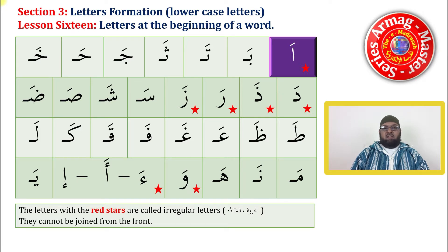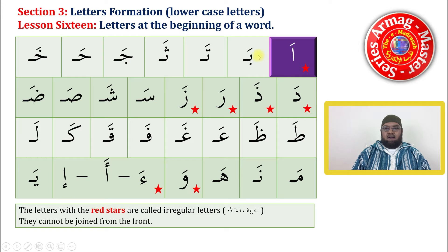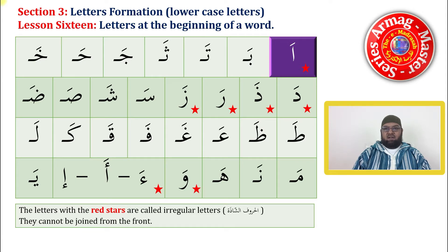Lesson 16 deals with the letters at the beginning of a word. If we look carefully here, we can see the letters BA, TA, THA and the rest of them — the shape is changed. When we want to write BA at the beginning of a word, this is how we write it. Now we have to learn the formation of these letters and then it will help us to write, read and join in.